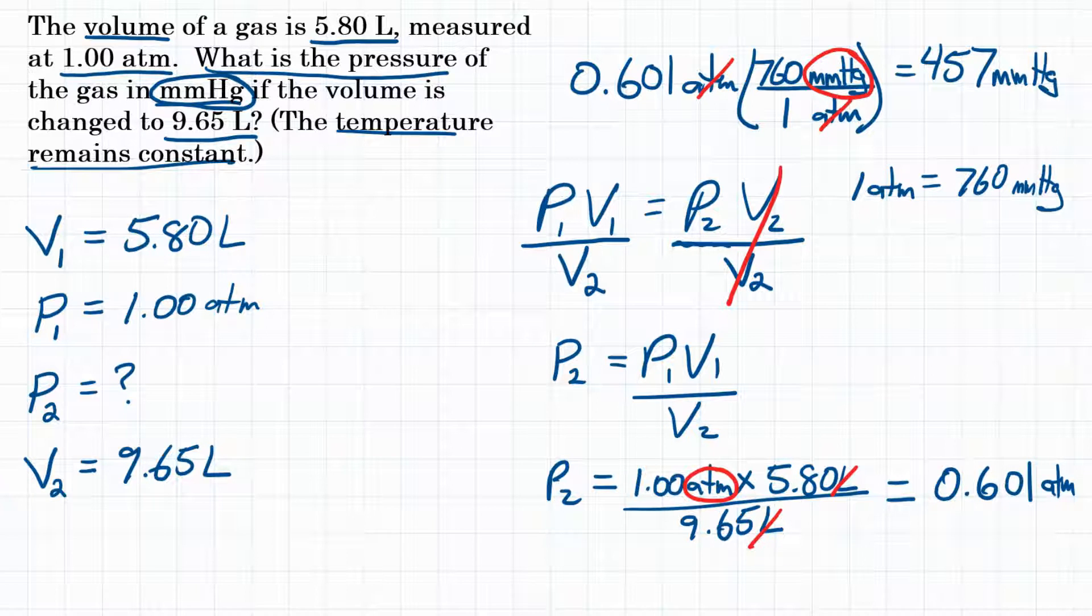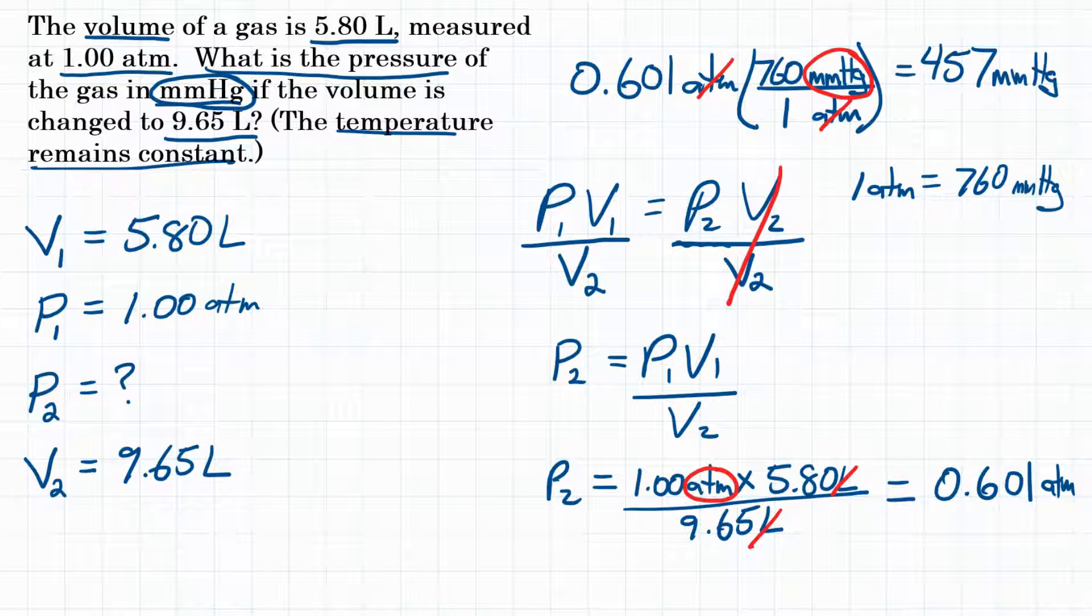There you have it. The volume of a gas is 5.8 liters at 1 atmosphere. What is the pressure in millimeters of mercury if the volume is now 9.65 liters? That would be 457 millimeters of mercury.